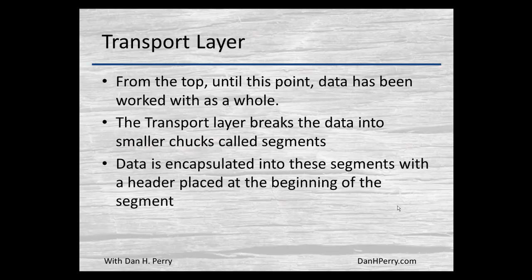Looking at our OSI model, up to this point we've been dealing with data as a whole — so if a file was five megabytes in size, we've been dealing with the entire five-megabyte chunk. The transport layer takes that large file or data chunk and breaks it into smaller groupings called segments. Each of those segments is encapsulated — think of encapsulation as placing those segments inside an envelope. That envelope has a header at the beginning of each segment.